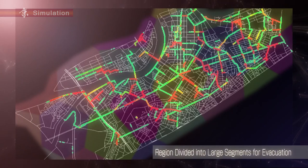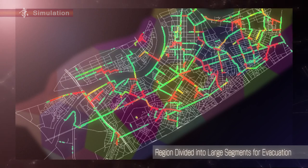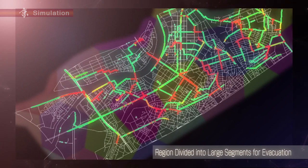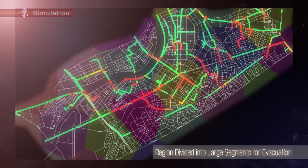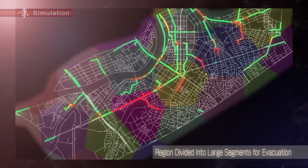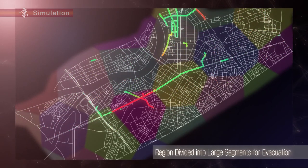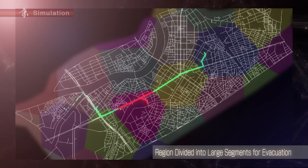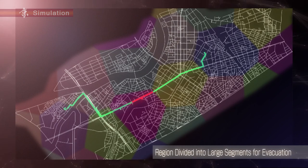A region was divided into town-sized segments, and the residents were given generalized instructions for evacuation. The areas congested with people are shown in red. As seen here, the residents can't efficiently get to the designated shelter — the dots representing people remain because they take a long time to get there.